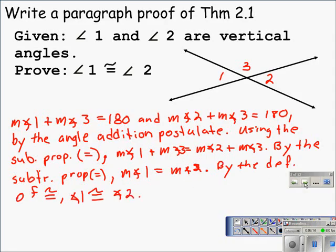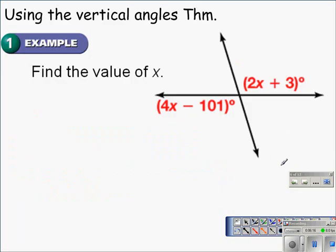The next problem we're going to take a look at just involves using the vertical angle theorem to solve a problem for x. We can see we have two intersecting lines. This angle here is labeled as 4x minus 101. This angle here is labeled with the expression 2x plus 3. Well, since those two angles are vertical angles, we know they're congruent and therefore they are equal. All we have to do is set this expression, 4x minus 101, equal to 2x plus 3.